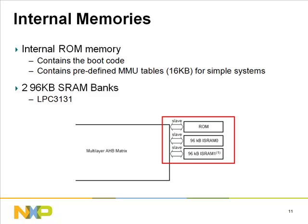There are two 96 kilobytes SRAM banks in the LPC 3131 and one bank in the LPC 3130. With the two-bank approach, instructions can be compiled to bank 0 and stacks can go to bank 1. The advantage is that the ARM instruction port will use a separate AHB layer while the ARM data port uses another, avoiding bus contention and improving overall system performance.